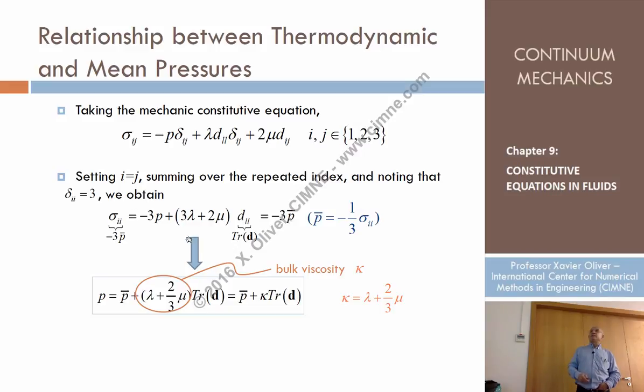The trace, that part moving to the other side, the thermodynamic pressure is equal to the mean pressure plus this term which comes from these viscous terms. And this term is called the bulk viscosity, K. Remember in elasticity, we have something that we call a bulk modulus, which was defined as lambda plus two thirds of mu. So here it appears, but as a bulk viscosity. The mean pressure and the hydrostatic pressure are not the same, but are related with each other in terms of this.